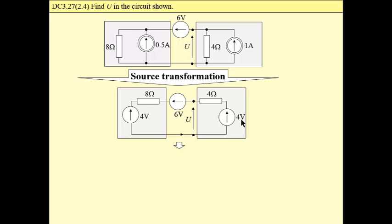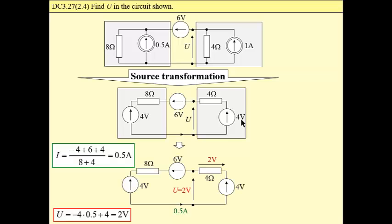At first, we have to find a current mesh current. This mesh current is algebraic sum of voltage sources divided by sum of resistances. And this mesh current, as you can see, is 0.5. If we have this current, we may calculate this voltage drop from Ohm's law and having this voltage drop and this voltage, we may easily find that our voltage, the voltage that we are looking for, is 2V, same as before.